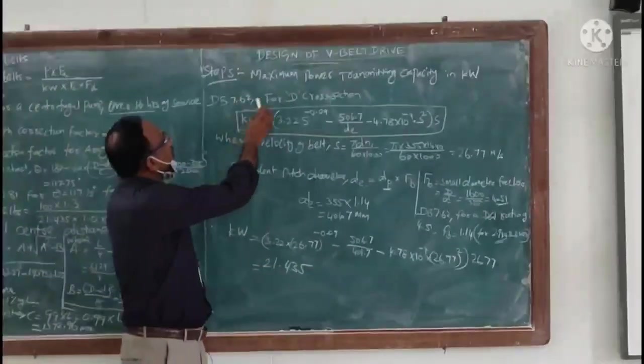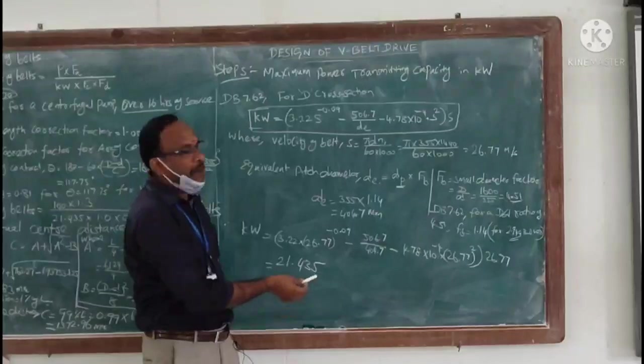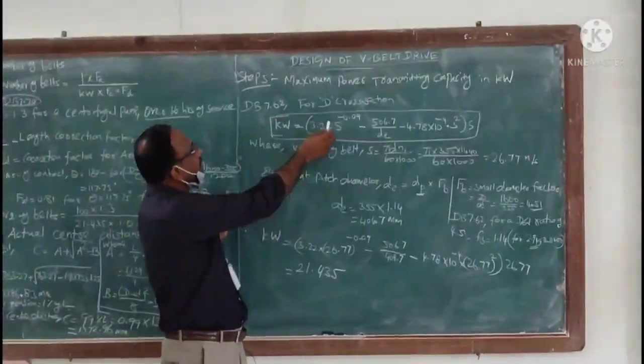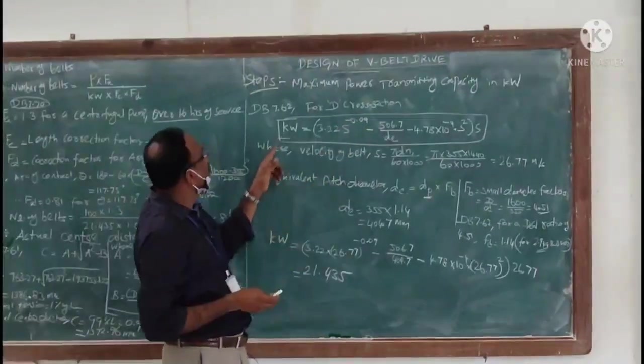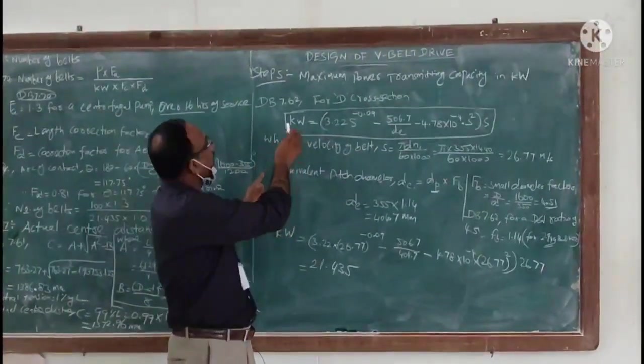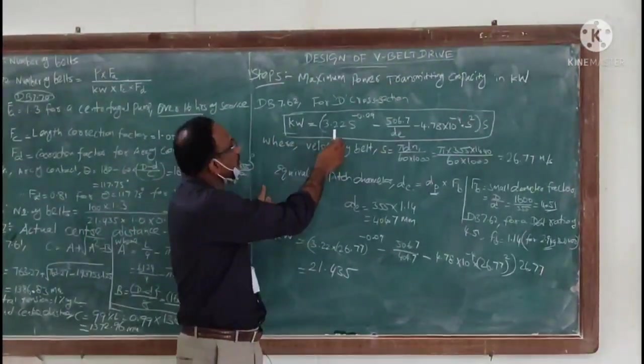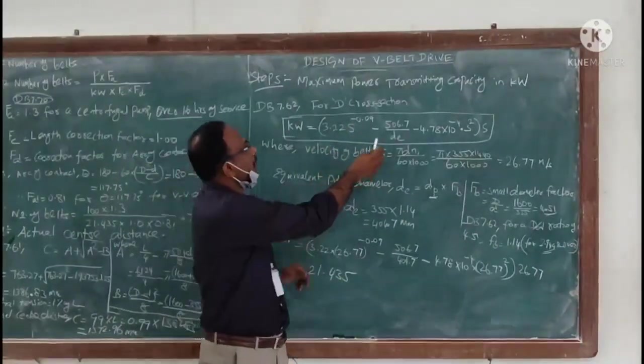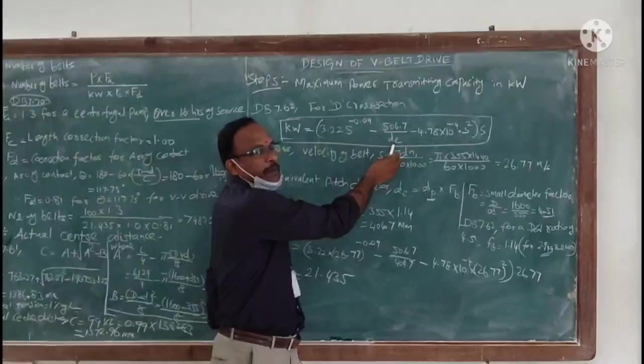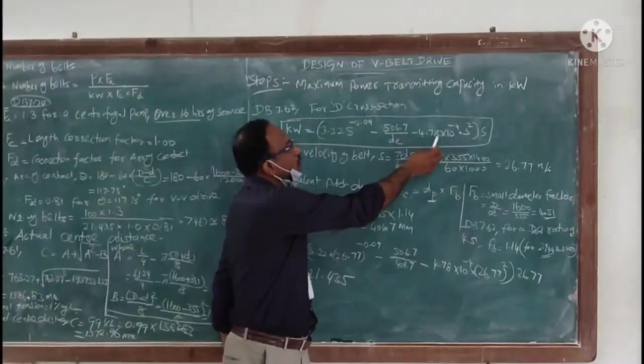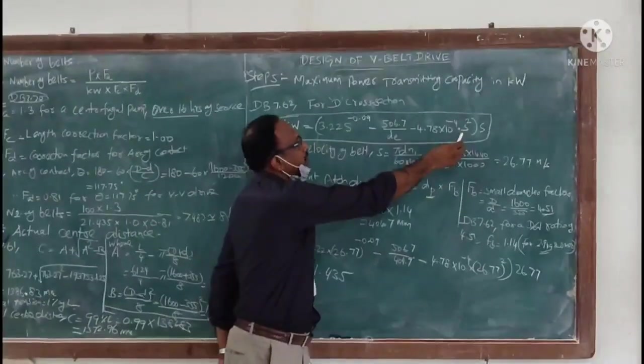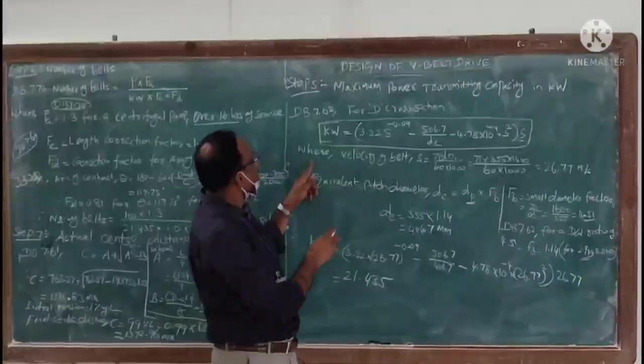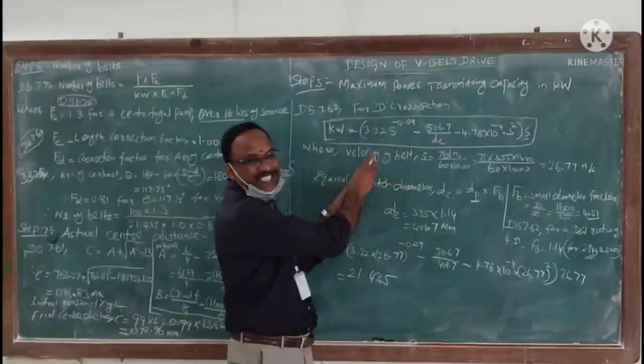Next step is calculation of maximum power transmitting capacity in kilowatt. From the data book page number 7.62 for T cross section, formula available is K_tau_u equals 3.22 S to the power minus 0.09 minus 506.7 by T_E minus 4.78 times 10 to the power minus 4 multiplied by S squared, whole multiplied by S, where velocity of the belt is S.